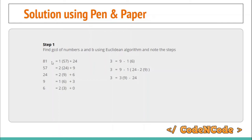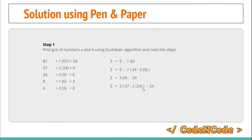We continue moving upward in the Euclidean steps. We replace 9 using the equation 9 = 57 - 2 × 24. Substituting into 3 = 3 × 9 - 24 gives: 3 = 3 × 57 - 7 × 24. Now we have 57 in the equation but still need to replace 24.